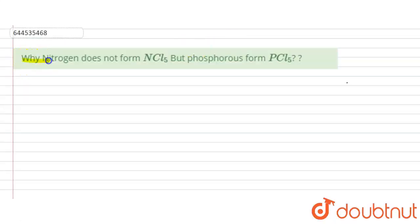In this question it is given: Why nitrogen does not form NCl₅ but phosphorus forms PCl₅? So first of all, in order to form NCl₅, nitrogen should show +5 oxidation state.